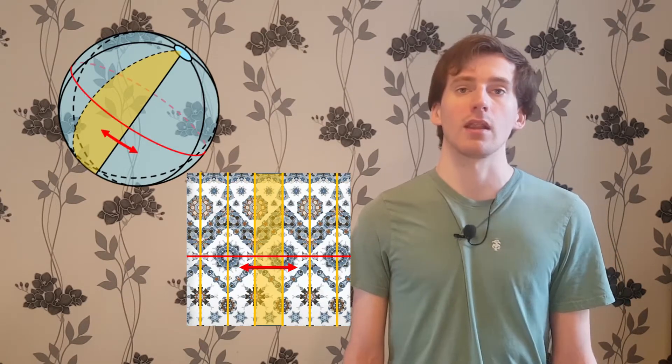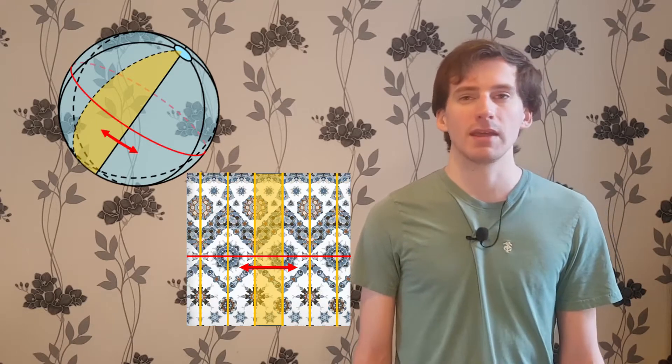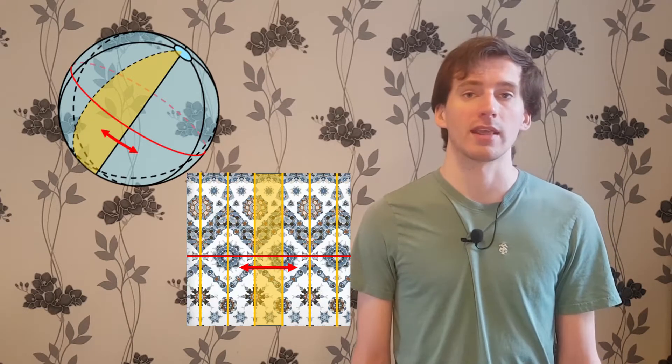Last week, Albert ruled out tilings of the plane which had an infinite strip as their fundamental domain. For similar reasons, it makes sense for us to ignore tilings of the sphere which have a lune as their fundamental domain. This is because the surface of a sphere is a two-dimensional object. But if a lune is the fundamental domain for the pattern, all the symmetries are acting along the same single line. So they aren't really making use of the whole two-dimensionality of the sphere.